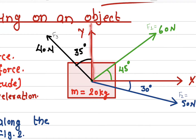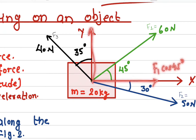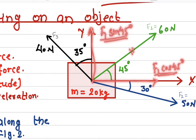This is our x-axis and this is our y-axis. The x-component of F1 will be along the x-direction: F1 cosine 45°. And the y-component will be F1 sine 45°. We now have two component forces and we do not need the original F1 force anymore.